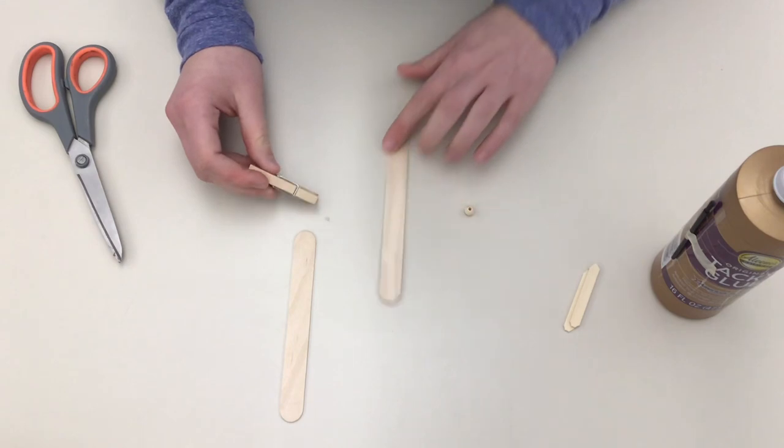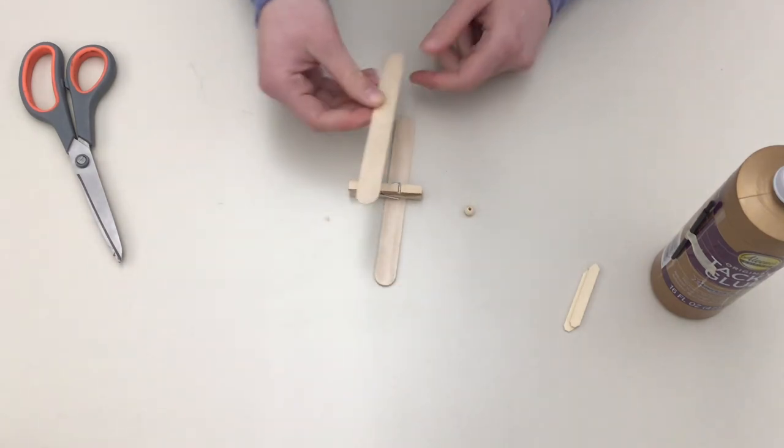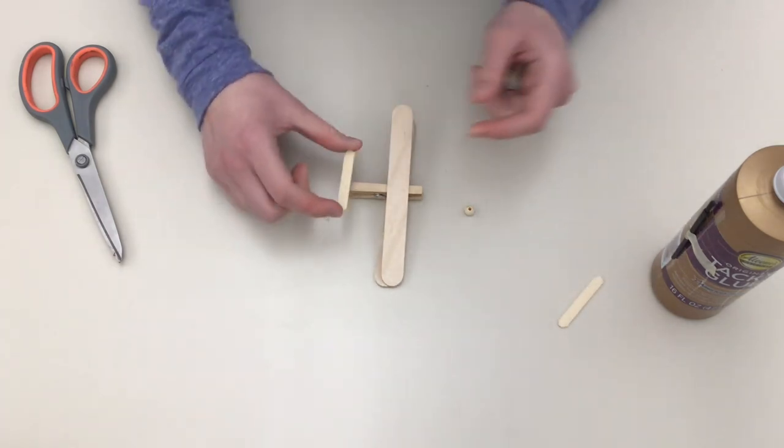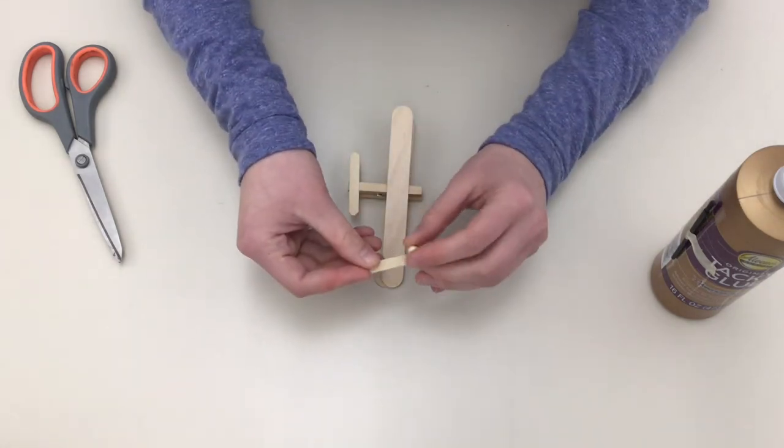We're going to assemble the plane by taking the clothespin and putting it between the two large craft sticks that will make up the wings, and then there's going to be a tail fin, and then the small wooden bead and the other half of the craft stick are going to make the propeller.